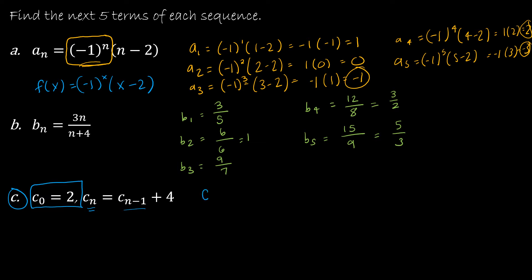So they've given me c sub 0 is 2. If I need to find c sub 1, that is telling me to take c sub 0 plus 4, or in this case, 2 plus 4, which is 6. And then c sub 2 would be c sub 1 plus 4, so that's 6 plus 4, or 10.